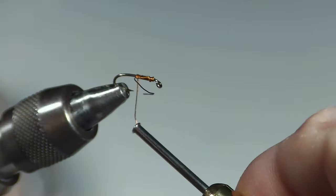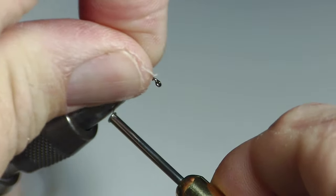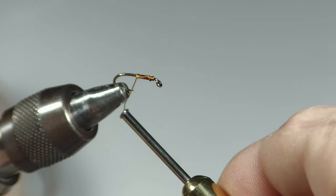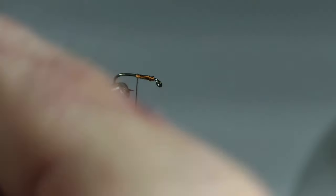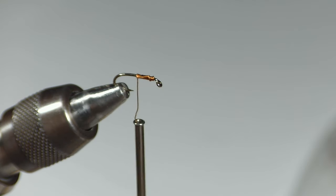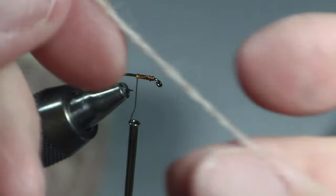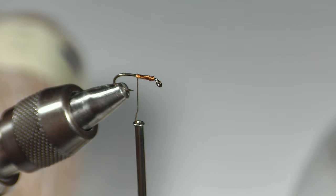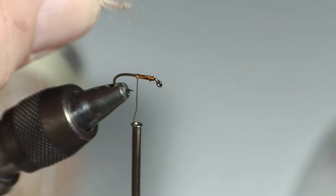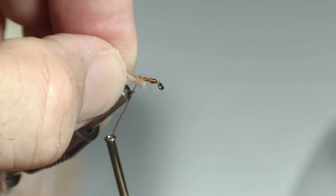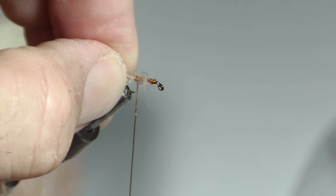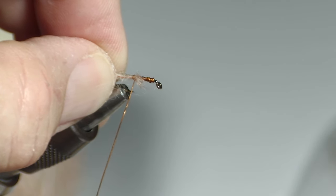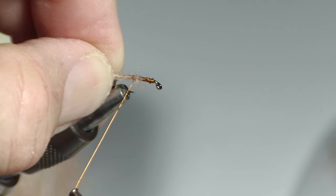And then what I do is I go ahead and helicopter off about the middle of the fly. And I'm going to take a length of this oyster. We're also going to use the Shetland spindrift while we're tying these style flies. There's another fly that's very similar to this called a Utah killer bug. This is a Sawyer killer bug.